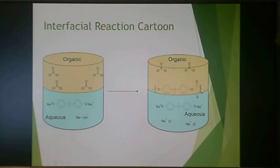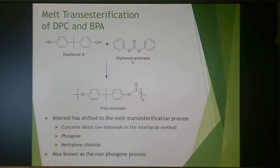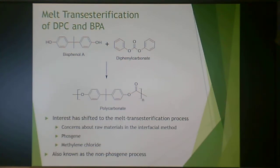Melt transesterification uses diphenyl carbonate and bisphenol A. Importantly, this doesn't use phosgene, which is considered a plus — phosgene is very nasty and has been used in chemical warfare. Getting away from phosgene is not a bad thing, and this process is also known as the non-phosgene process.